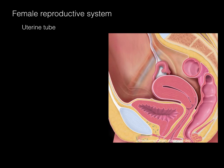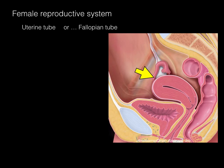The uterine tube is a tube that is close to the ovary with its fimbriae and then courses around to the uterus. The uterine tube is named after the anatomist Fallopius, which is why it's also called the fallopian tube. And because it transports the ovum, it is also called the oviduct. All of those are correct terms.